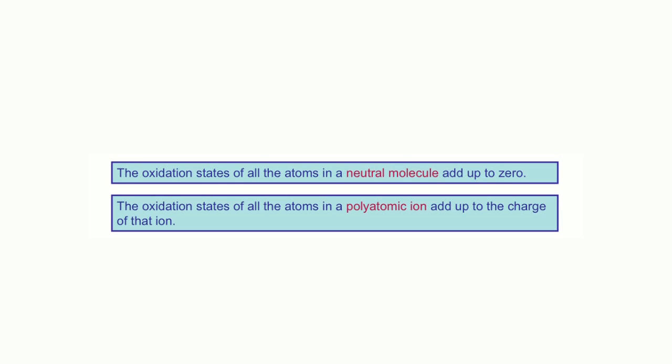The first of these rules says that the sum of the oxidation states of all the atoms in a neutral compound must be zero. And the second rule says that the sum of the oxidation states of all the atoms in a polyatomic ion must be equal to the charge of that ion. Now, let's apply this whole set of rules to a couple of examples to find out if we can determine the oxidation states of atoms that are part of compounds.